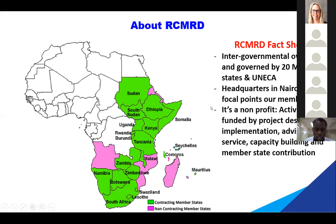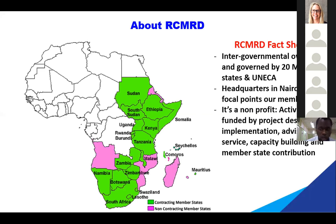The Regional Center is an intergovernmental institution owned and managed by 20 member states from northern to southern Africa. The headquarters are in Nairobi, with focal points in all member states. It is a nonprofit institution whose activities are mostly funded by projects we implement and design, as well as advisory services offered to member states. We also do capacity building for all our member states and receive some contributions from members.